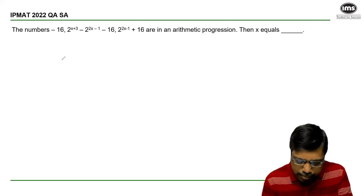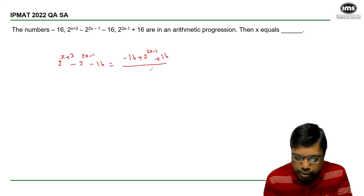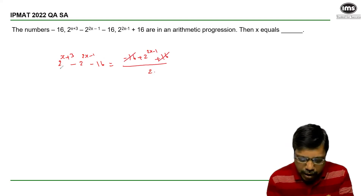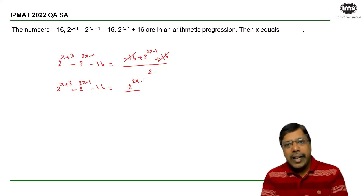Now, we know that when three numbers are in an arithmetic progression, the middle term — 2^(x+3) minus 2^(2x) minus 1 minus 16 — is equal to the average of the remaining two terms. Minus 16 plus 16 gets cancelled, so I can write this as 2^(x+3) minus 2^(2x) minus 1 minus 16 equals 2^(2x) divided by 2^(minus 1).